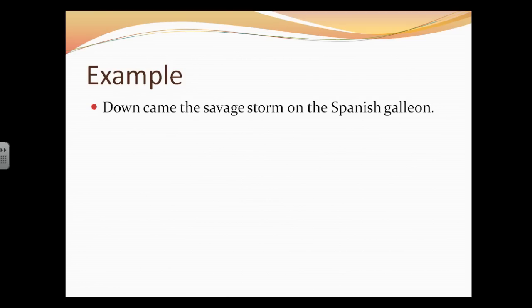Next. Down came the savage storm on the Spanish galleon. This is a sentence I borrowed from another source. A galleon is a type of ocean-going vessel. So the question is, what's the verb? Right. Came. Came is the verb. So the question is, who or what came?